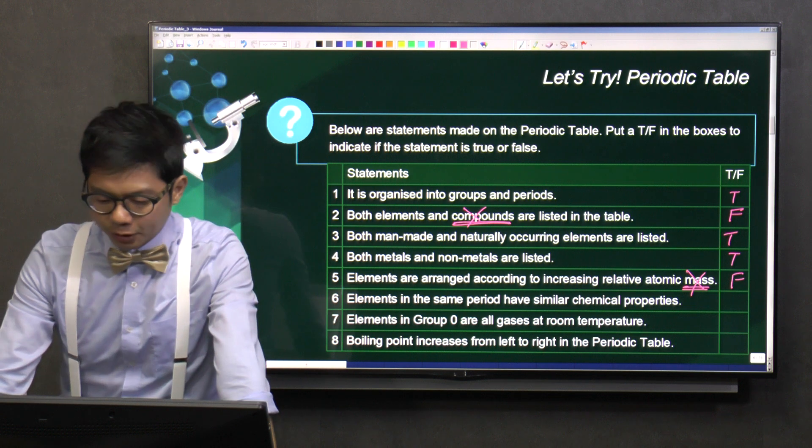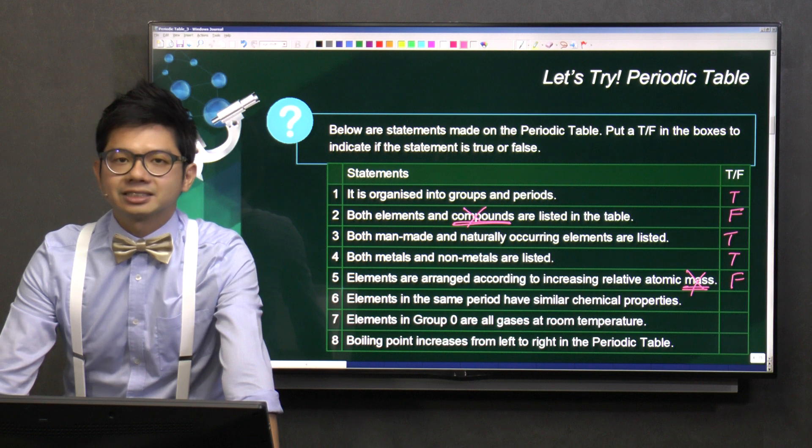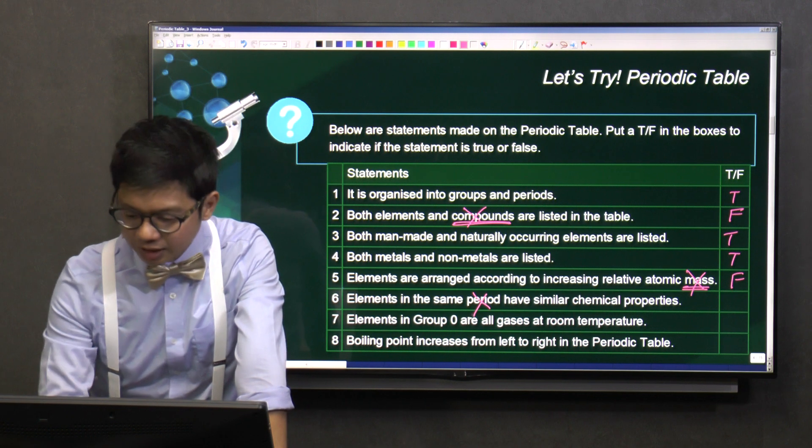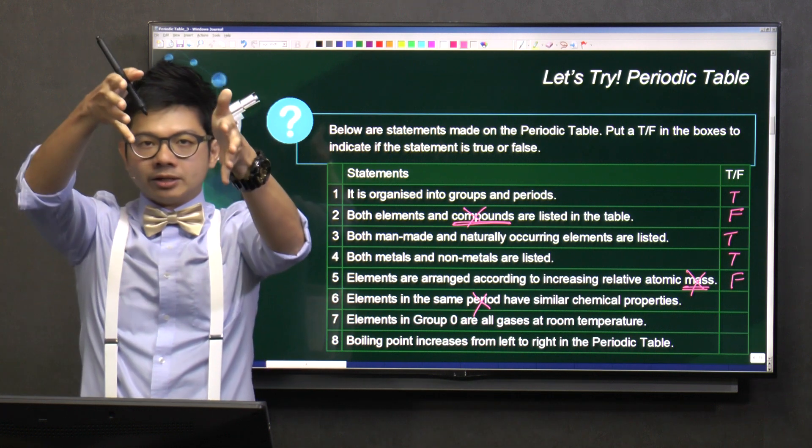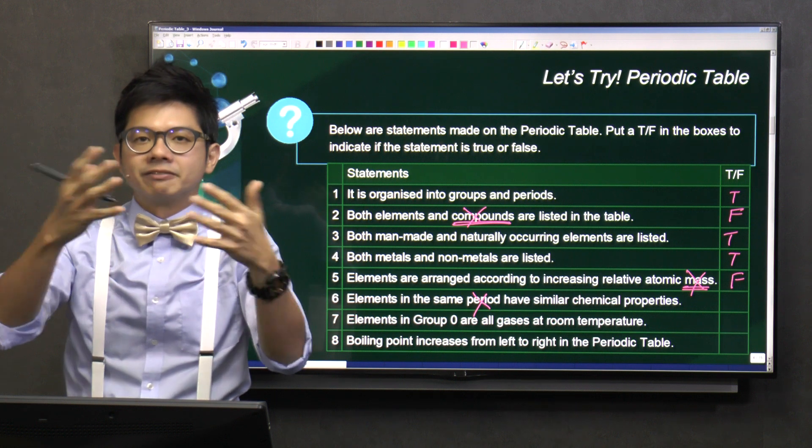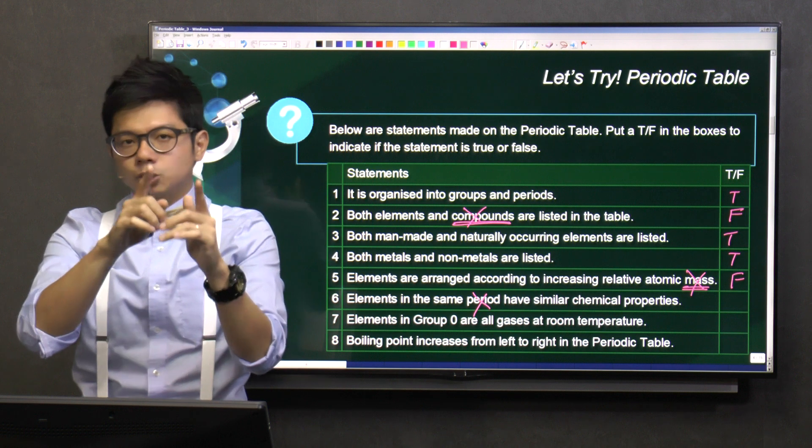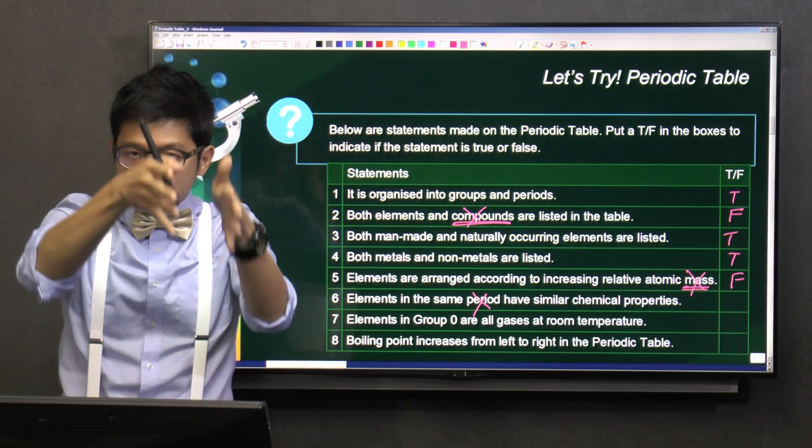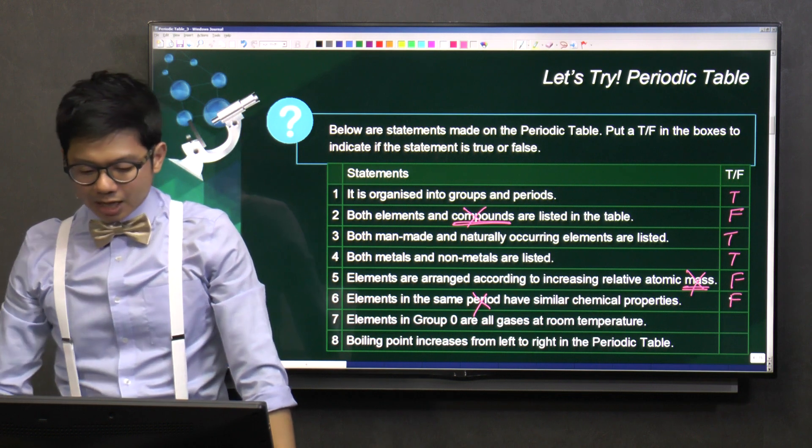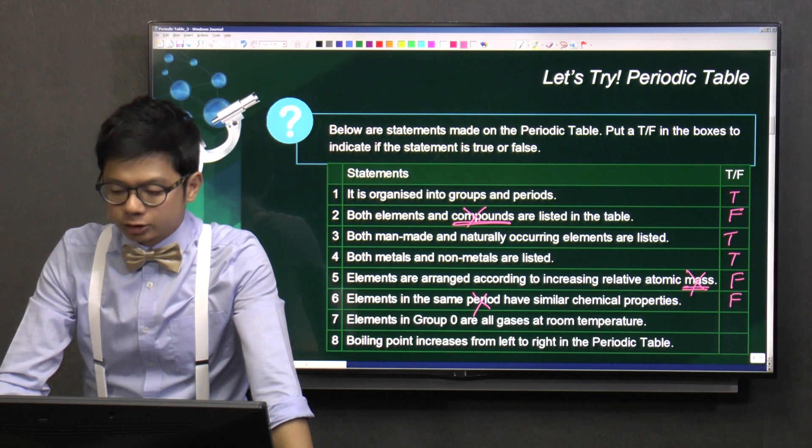Statement six, elements in the same period, they have the same chemical properties. Is this correct? I don't think so because it should not be the same period. It should be the same group. Only when they are grouped in the same group, the vertical column, they have the same chemical properties. Remember, previously we touched on this question. Sodium and potassium, they belong to the same column, same group. So, this is false.